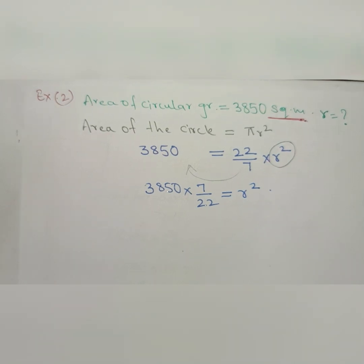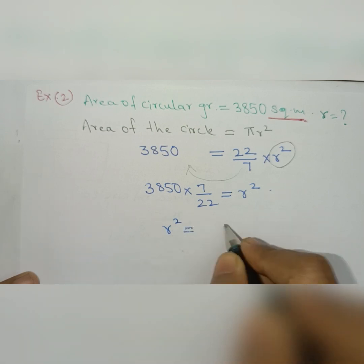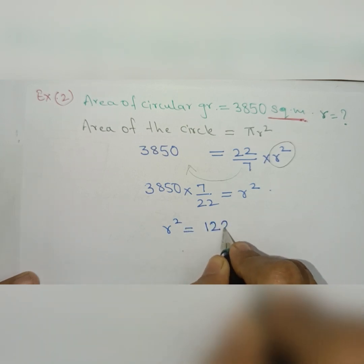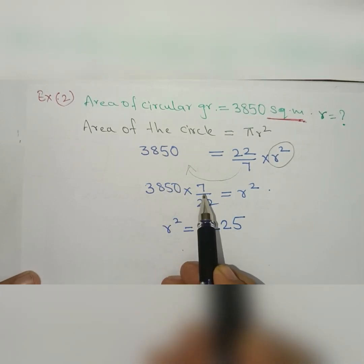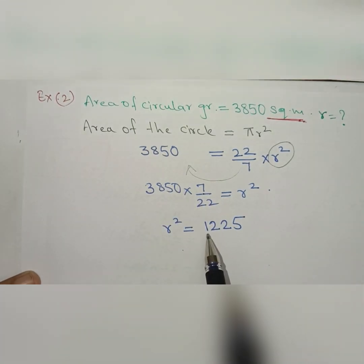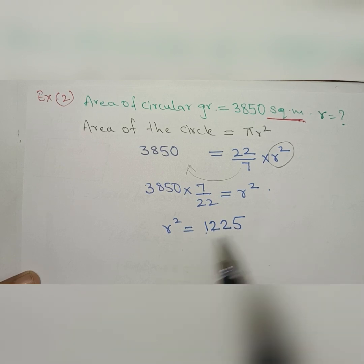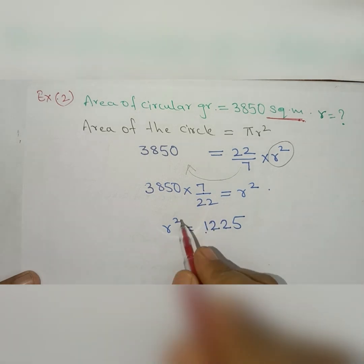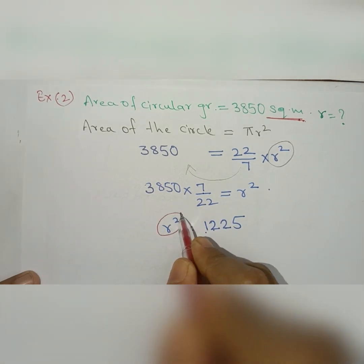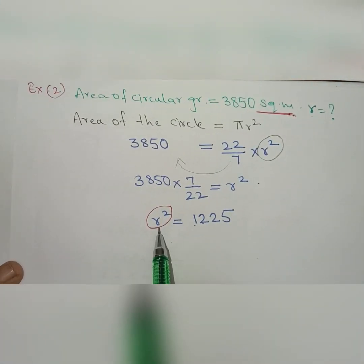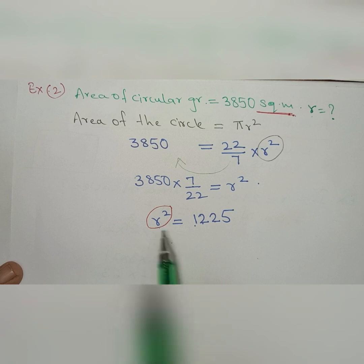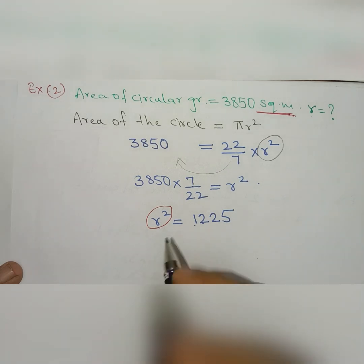Now we do the cancellation and multiply: r squared equals 1225. This is obtained by dividing 3850 by 22 and multiplying by 7. But we need the value of r, not r squared. So we must take the square root of 1225 to get r.